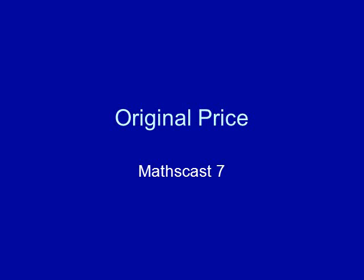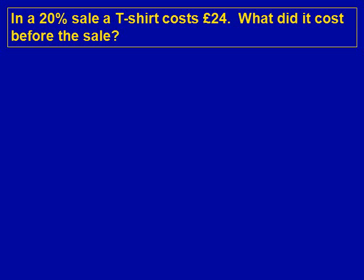Original price is a difficult question which will come up towards the end of an exam paper. It's normally worth about 3 marks and you need to understand what the question is asking. Here the question reads: in a 20% sale a t-shirt cost £24, what did it cost before the sale? The important thing to realise is that the percentage change has already happened and you need to work out what it cost before.